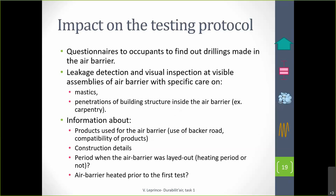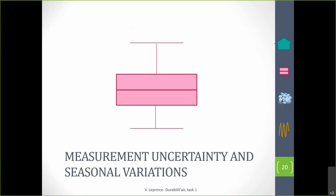Impact on the testing protocol: when performing field measurements, it is important to administer a questionnaire to occupants to find out what drilling has been made in the barrier and what has been changed in the envelope. It is also important to perform a thorough source-of-leakage detection and visual inspection, with specific attention to mastics and penetrations of building structures through the air barrier, such as carpentry. It is also important to gather information about the products used for the air barrier, construction details, the period when the air barrier was laid out — whether during the heating period or not — and whether the air barrier was repaired prior to the first test.